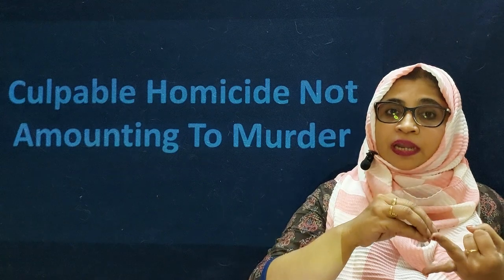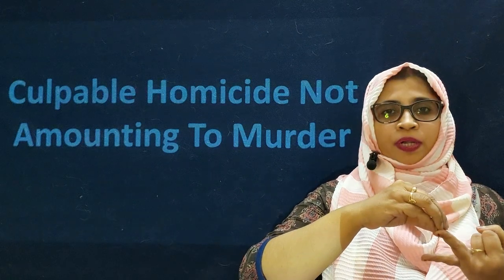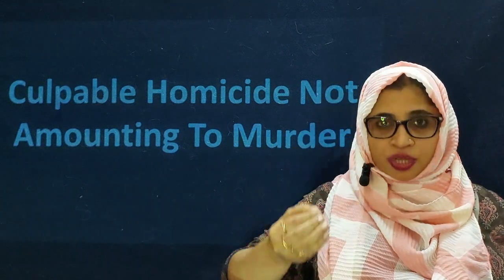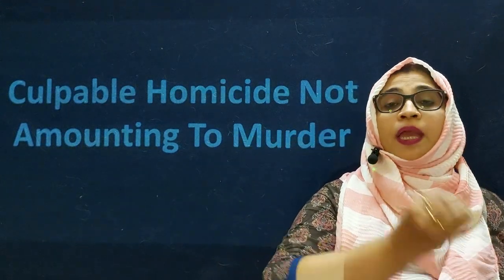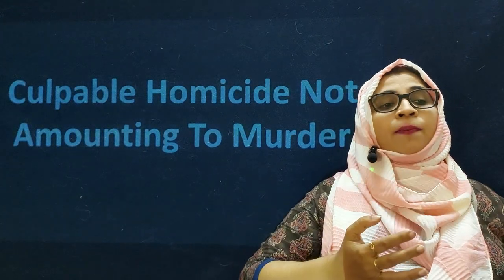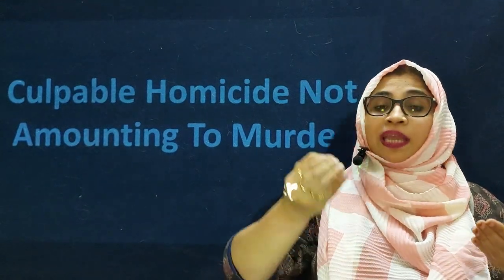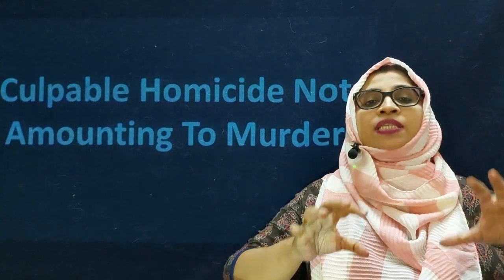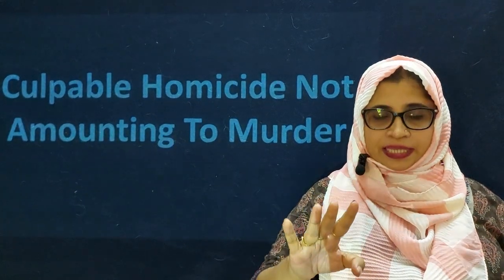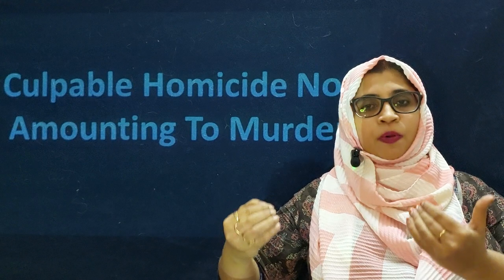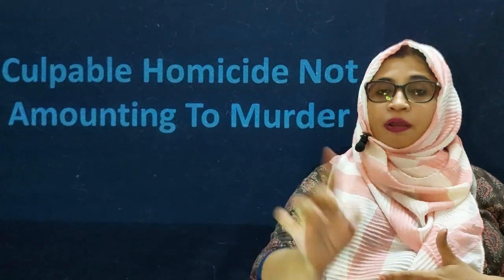Culpable homicide amounts to murder when all the classes of Section 300 are satisfied in a particular case. Culpable homicide not amounting to murder applies when all the exceptions of Section 300 are satisfied. In this class, we will discuss all the exceptions of Section 300.